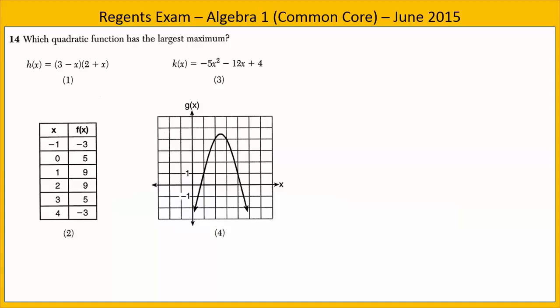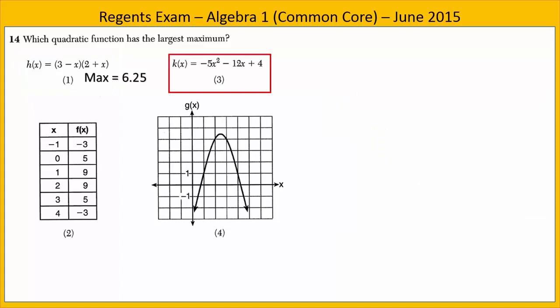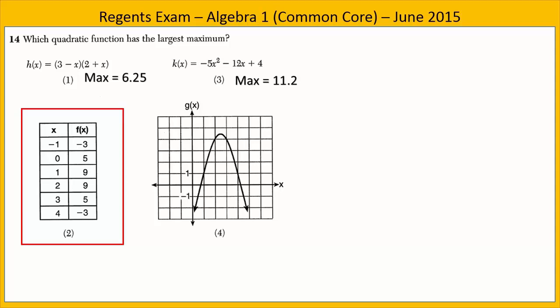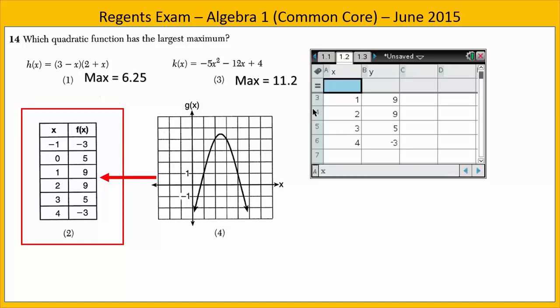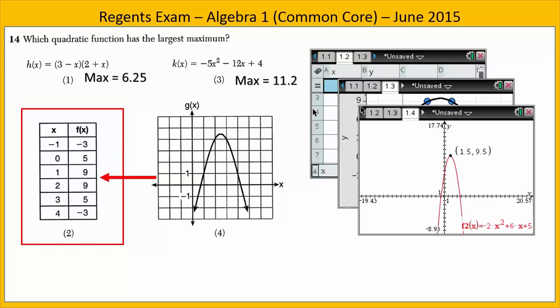In Exercise 14, we are given four quadratic functions and want to know which has the largest maximum. Using the graphing calculator: the first function has a maximum of 6.25. The second function has a maximum of 11.2. For the option given as a table of values, we perform a quadratic regression to find the equation, then identify the maximum — which is 9.5 for choice 2.